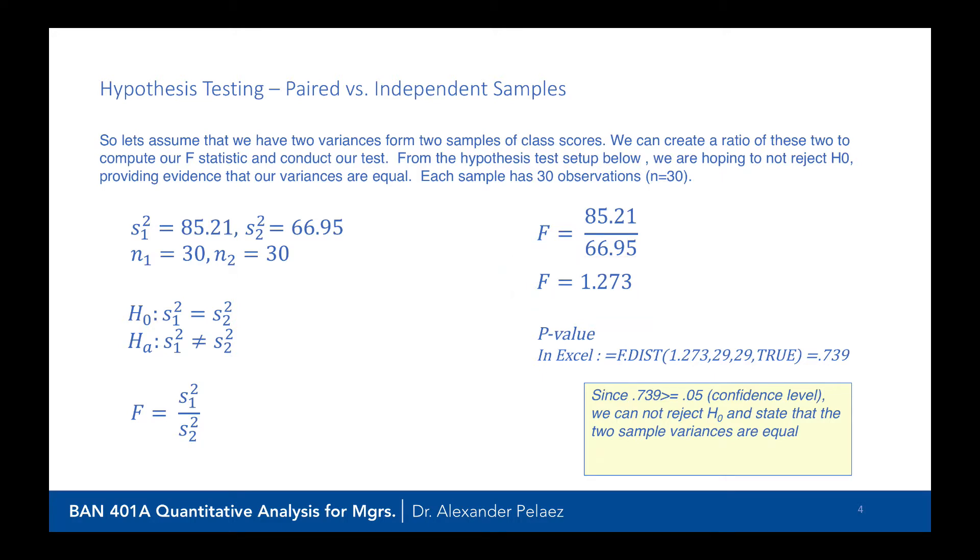We will then use the function in Excel called fdist. And fdist works, again, the same way. It basically will give us the area under the curve to the left using an F-distribution. We put in the number 1.273, but now we have to put in two sets of degrees of freedom.